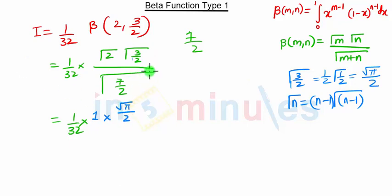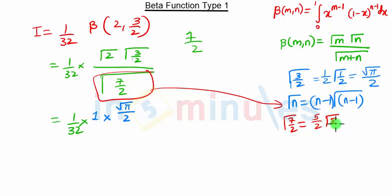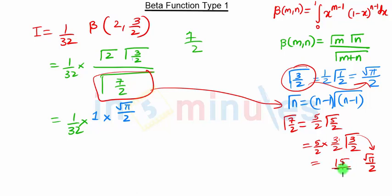For gamma of 7/2, again we're going to use the same formula. Gamma of 7/2 is n minus 1, so 7/2 minus 1 is 5/2 gamma of 5/2. Then again for 5/2, it's 5/2 minus 1, which is 3/2 gamma of 3/2. From here we just calculated gamma of 3/2 as root pi by 2, so we substitute that. 5/2 times 3/2 is 15/4, times 4 into 2 is 8, so 15 upon 8 root pi.